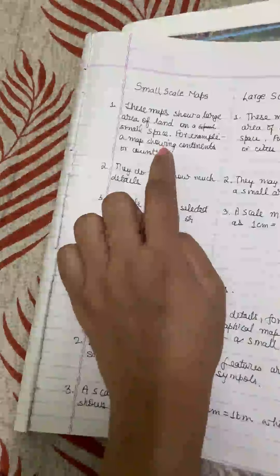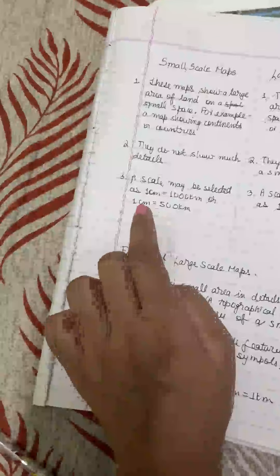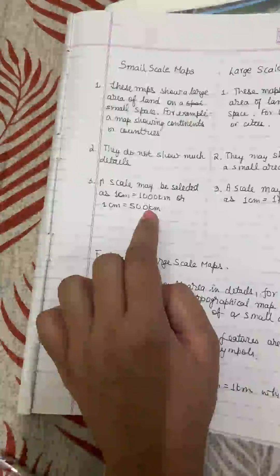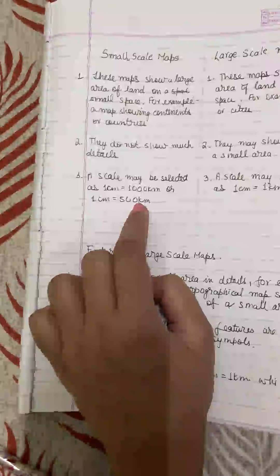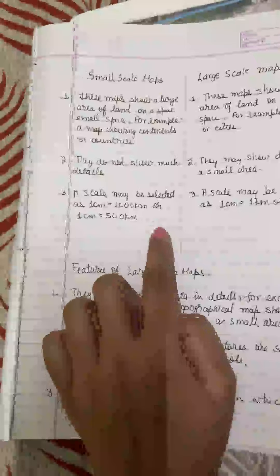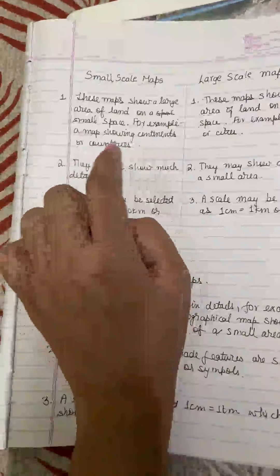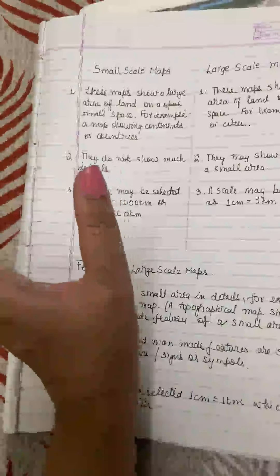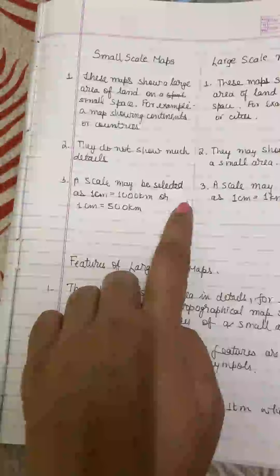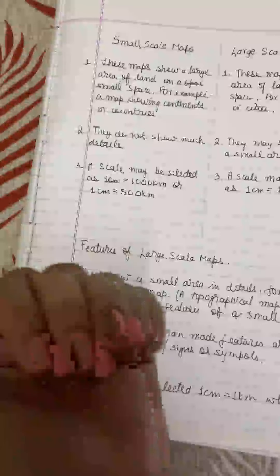On a small scale map, because I have to show a very big area on a small piece of paper, the distance assumed will be very large — for example, one centimeter equals one thousand kilometers or one centimeter equals five hundred kilometers. We cannot show much detail because we are covering a very large stretch of land. These are the three features of small scale maps: they show a large area, cannot show much detail, and use a very large scale.